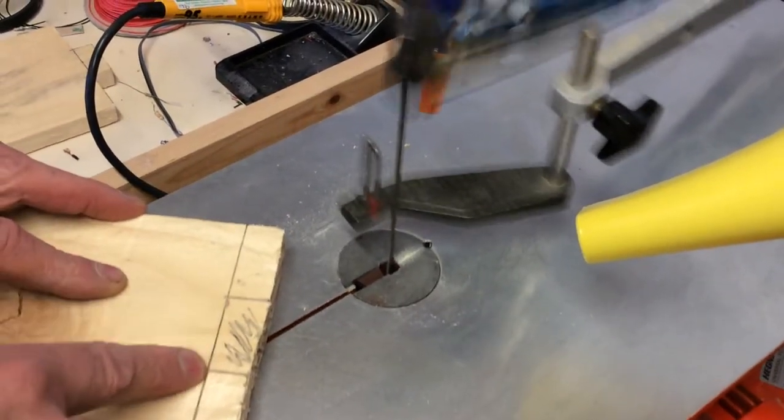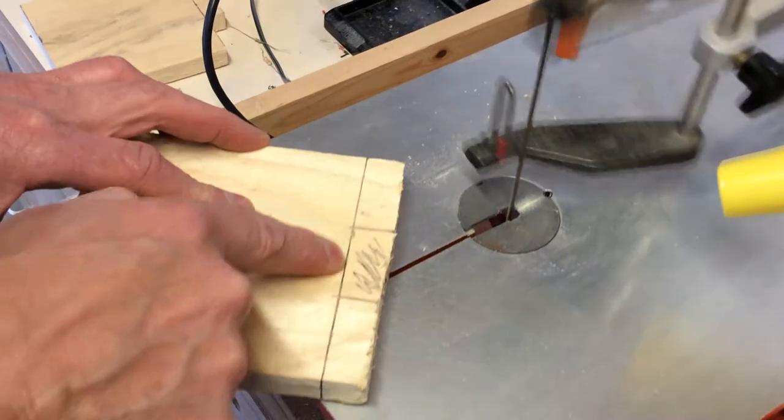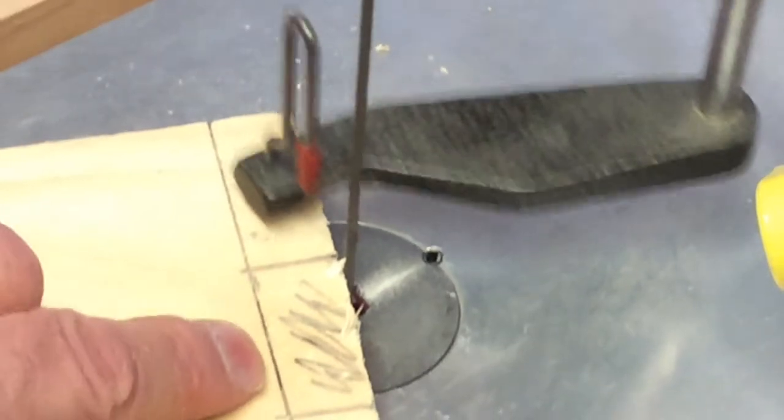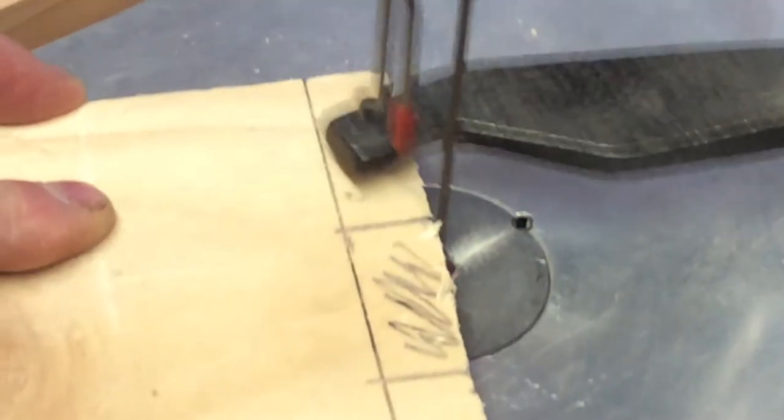Now we've got to get the bottom out, cut to this line exactly down here. So what we do this time is we go back in there, and as we saw, we're going to turn gently around so we end up cutting down to that line. Watch this carefully.